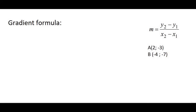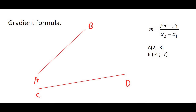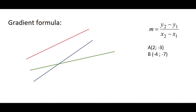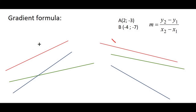The next formula we're going to talk about is the gradient formula. The gradient formula tells us how steep a line is. For example, line AB is steeper than line CD, so we say that line AB has a larger gradient than line CD. Lines that go upwards in this direction are positive, and lines that go downwards are negative — they have a negative gradient. We're now going to work out the gradient between points A and B using the formula.